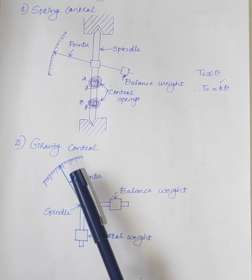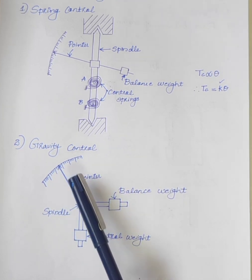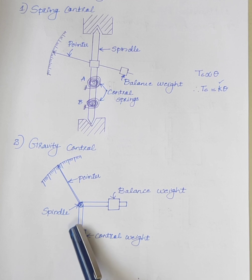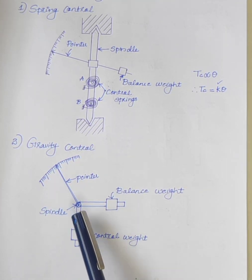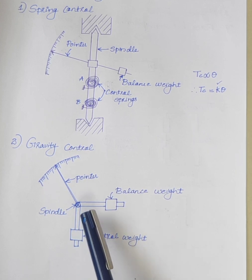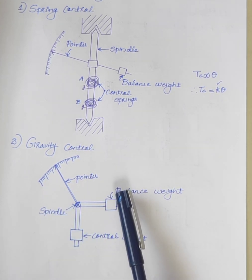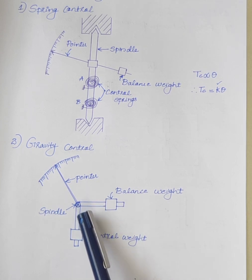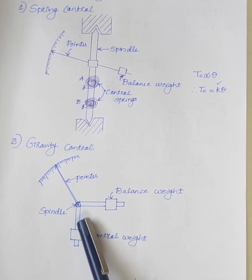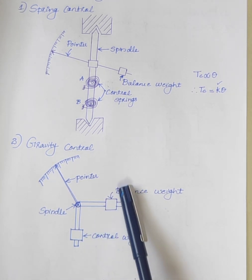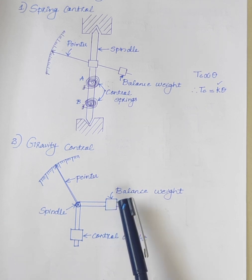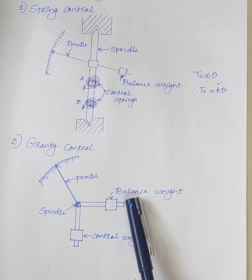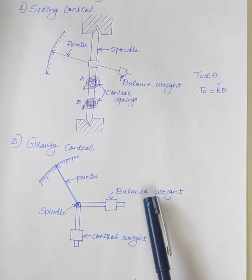The next method is gravity control. In a gravity controlled instrument, a small weight is attached to the moving system in such a way that it produces a controlling torque when the moving system deflects. The controlling torque can be varied easily by adjusting the position of the controlling weight. Another adjustable weight is attached for zero adjustment and balancing purposes. This weight is called the balancing weight.